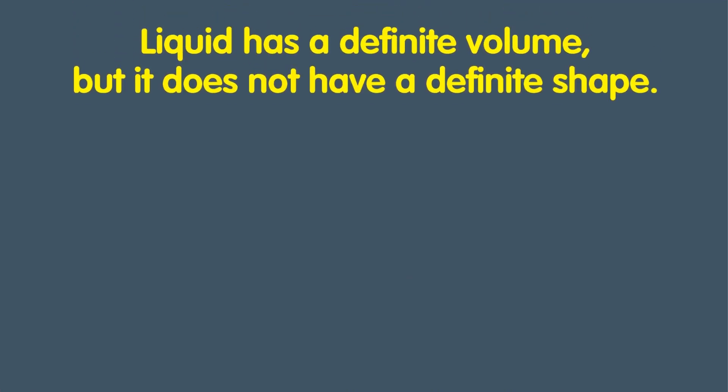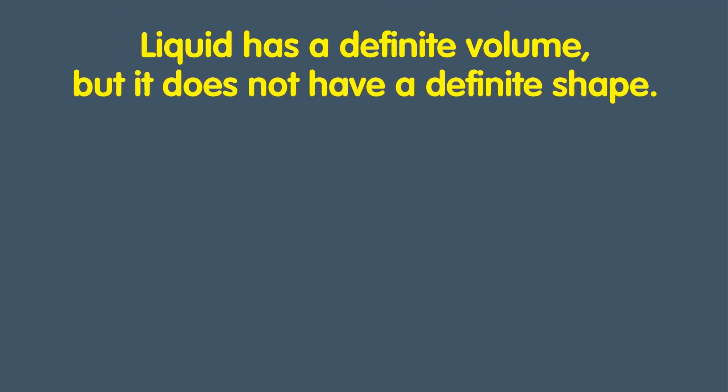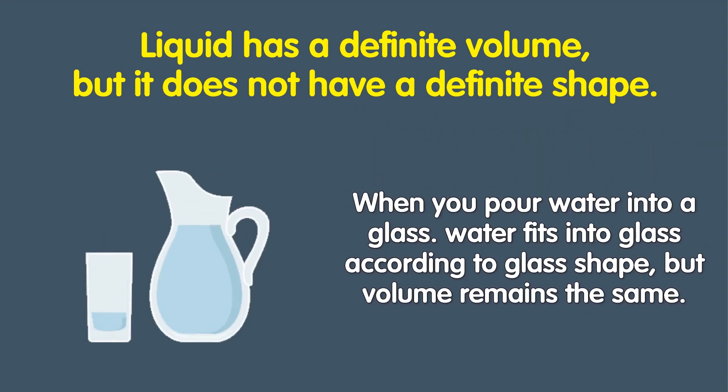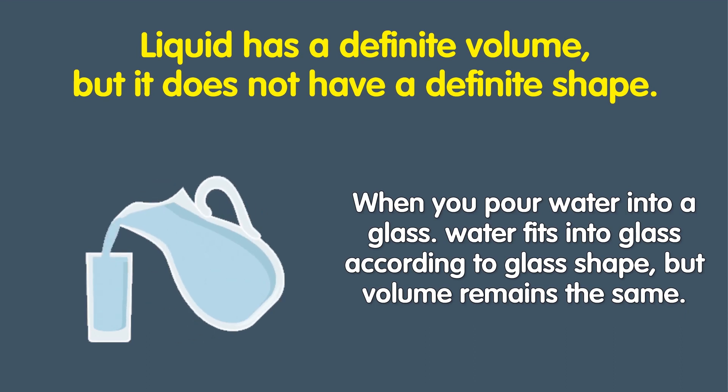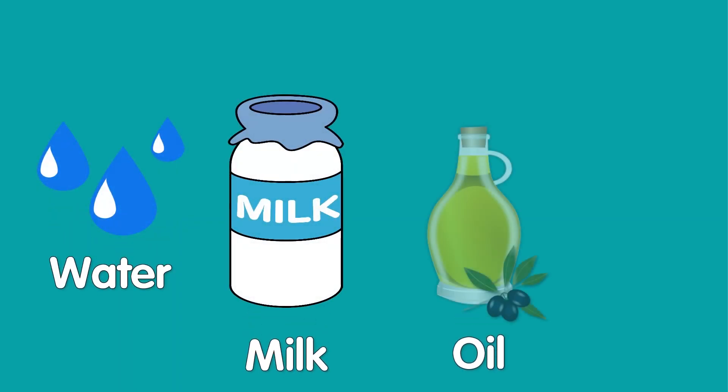Liquid has a definite volume but does not have a definite shape. When you pour water into a glass, water fits into the glass according to the glass shape, but the volume remains the same. Water, milk, oil, and blood are examples of liquids.